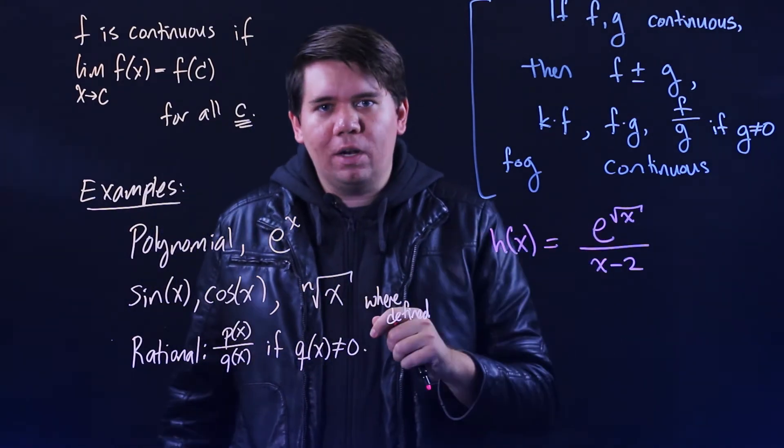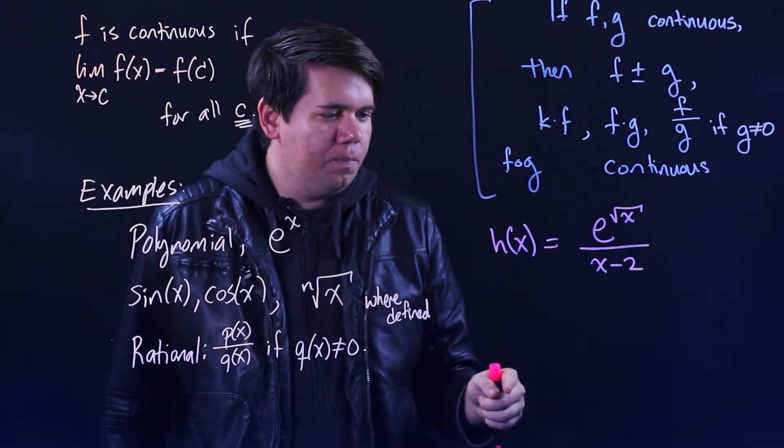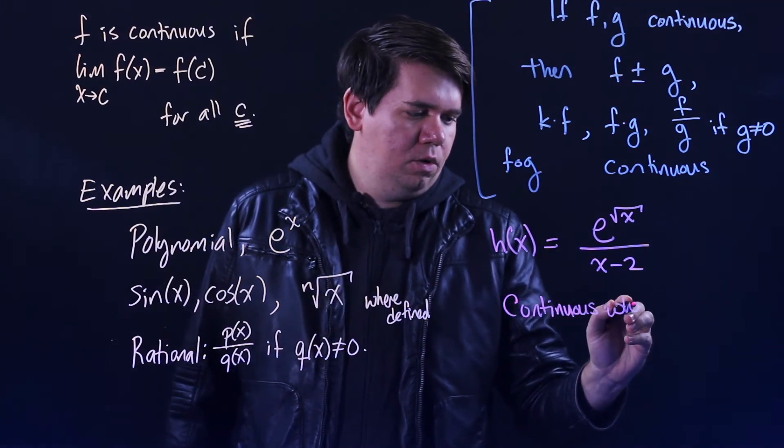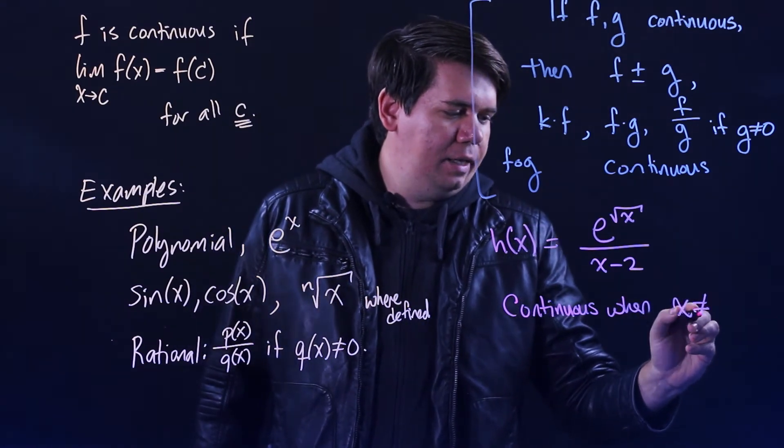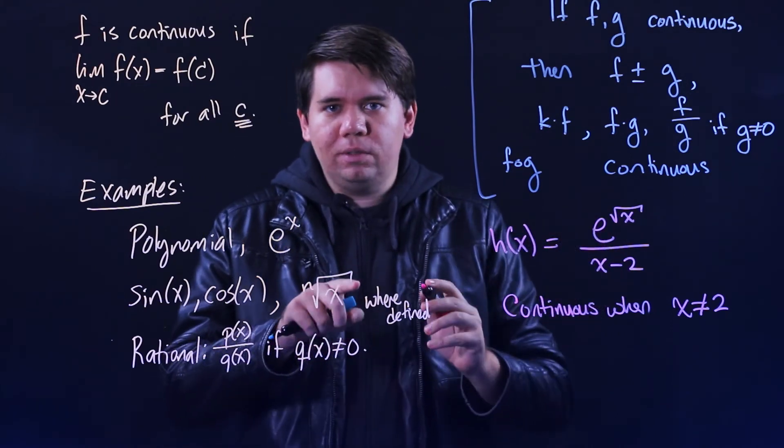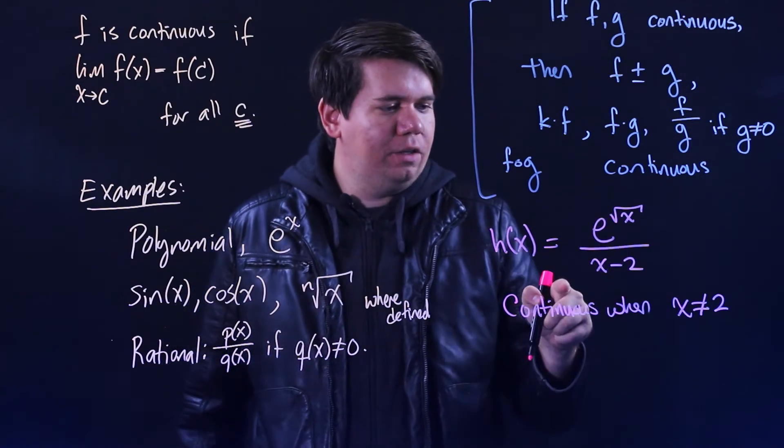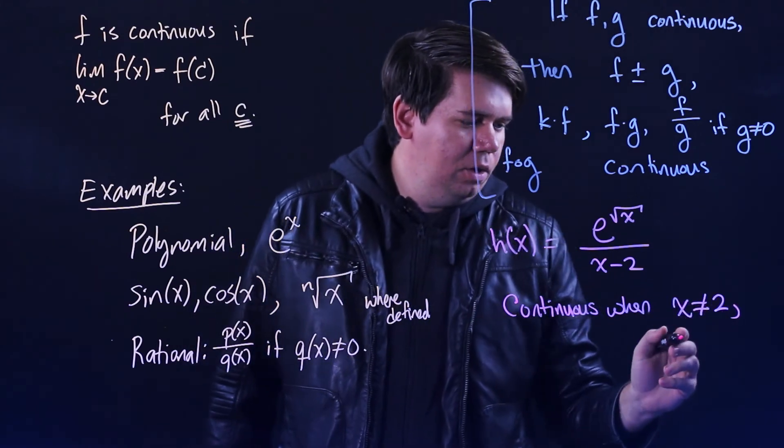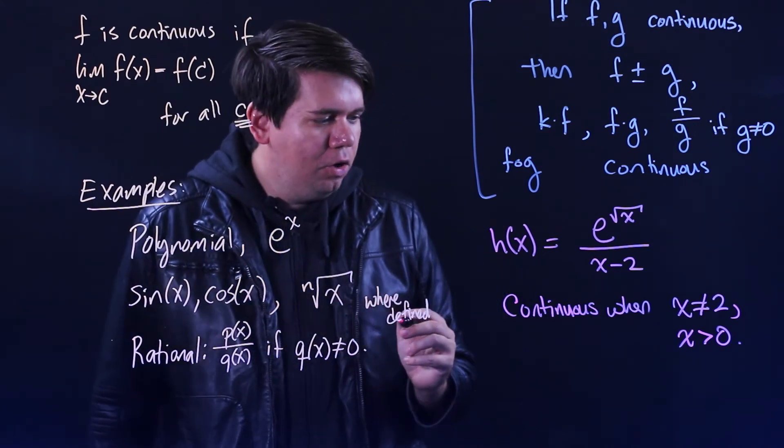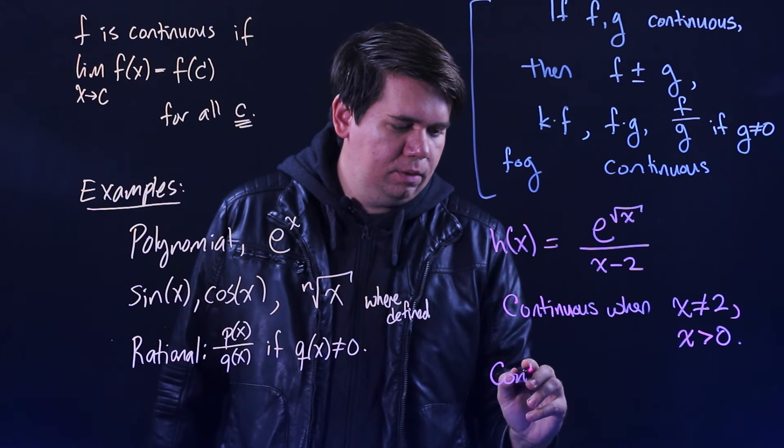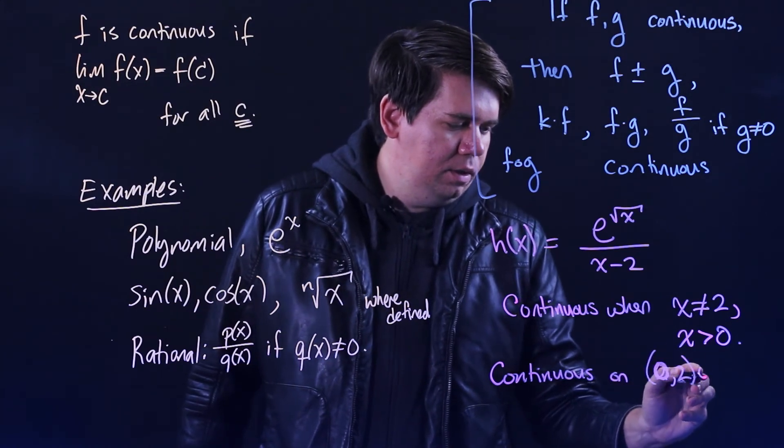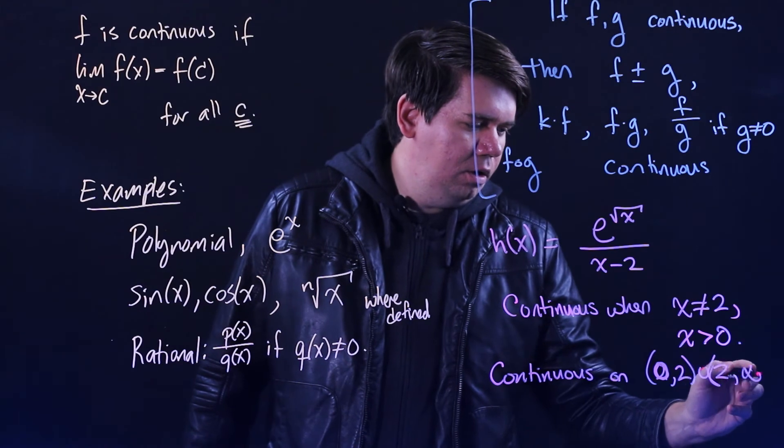Well, first of all, we know that division will only result in something continuous if the bottom is non-zero. So this will only be continuous when the bottom is non-zero, so x can't be equal to 2. Also, this is only going to be continuous where it's defined. We said square roots and fifth roots and whatever root you're looking at, eighth roots, are only continuous where they're defined. So a square root of x will only be continuous when my x is defined to be some positive value. And so, what do you end up with? We end up with it's continuous on the interval from 0 up until 2 and then from 2 off to infinity.